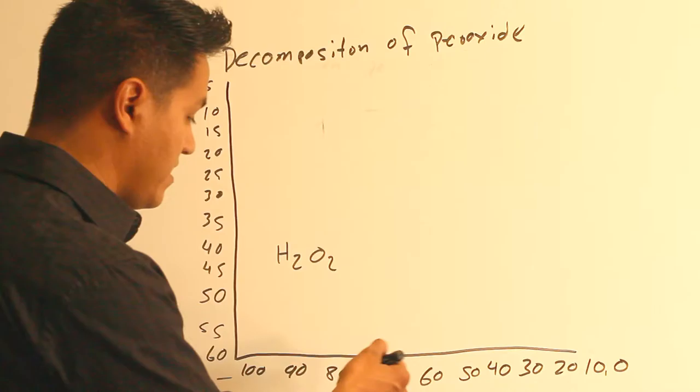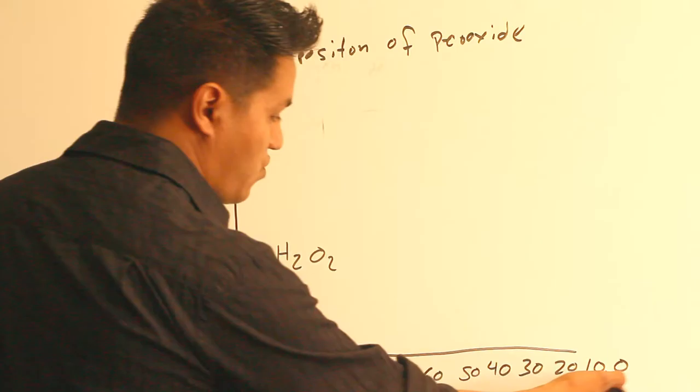We have the strength of the peroxide: 100%, 90%, 80%, 70%, 60%, 50%, 40%, 30%, 20%, 10%, 0%. Right guys, so let's review what we did already.